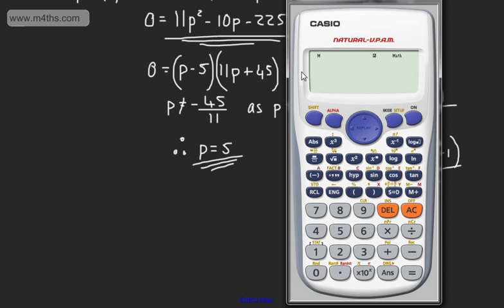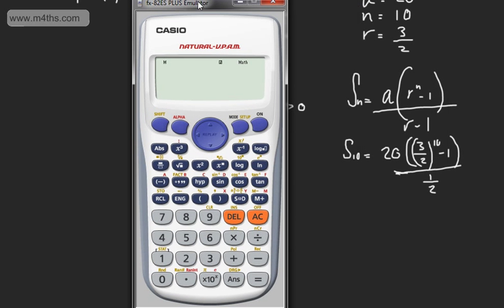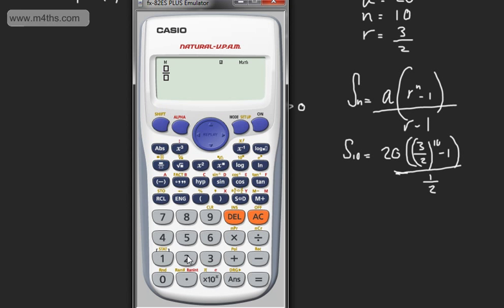So I'm going to plug this into a calculator. We'll have 20 multiplied by 3 over 2, or 1.5, to the power of 10, subtract away 1, and divide the fraction by a half.